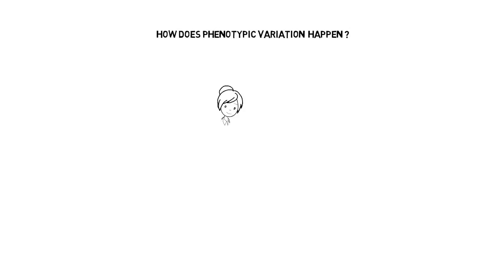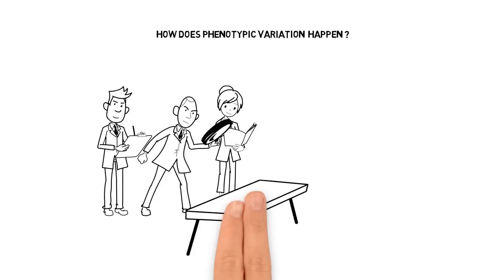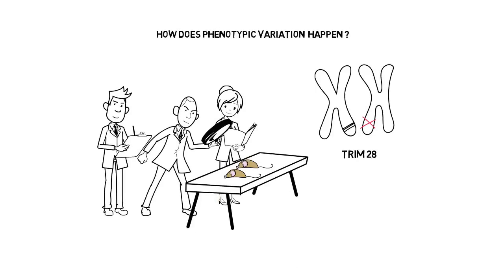A while ago now, we started studying a strain of mice missing one copy of a gene called Trim28. What made these mice so interesting was that even though they were basically genetically identical, their body weights were all over the map.